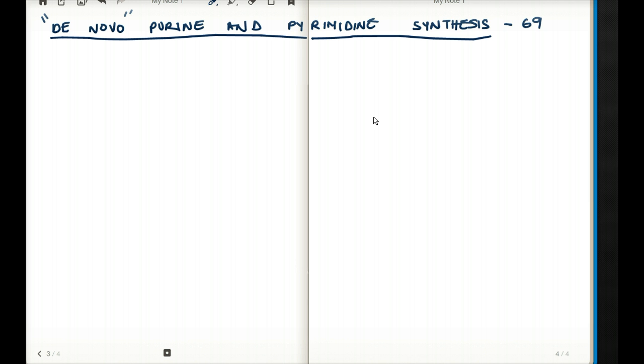And this is only de novo purine and pyrimidine synthesis, that means it's starting from scratch. Not all purines and pyrimidines are made from scratch. We recycle a lot of them through, and that's called the salvage pathway. That's a separate video. But in this video, I'll be only talking about de novo purine and pyrimidine synthesis. So let's get right into it.